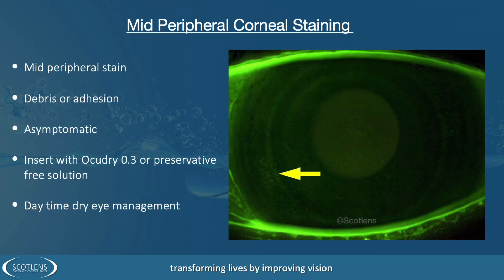If we see staining in the mid-peripheral area like we see here where the yellow arrow is, this is usually caused by debris underneath the contact lens or by adhesion between the lens and the corneal epithelium. It tends to be asymptomatic unless the staining is quite marked, in which case the patient may have foreign body sensation. This is treated with preservative-free drops such as Ocudry 0.3 and ocular surface management during the day — it's possibly an indication the patient has dry eye in their normal daytime environment.